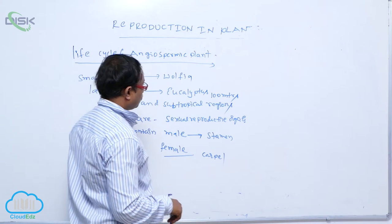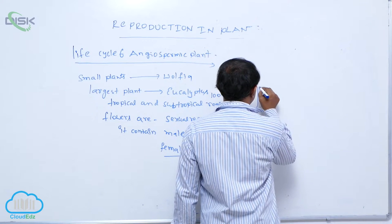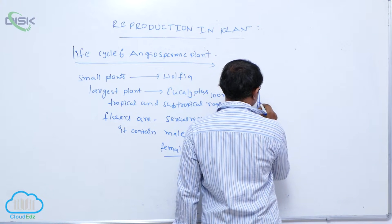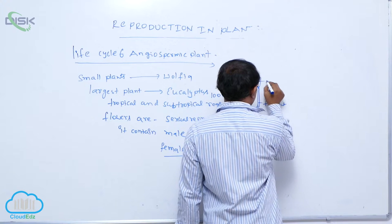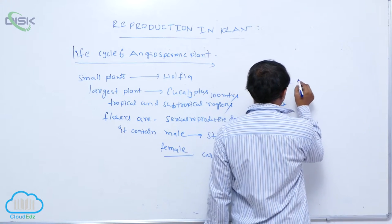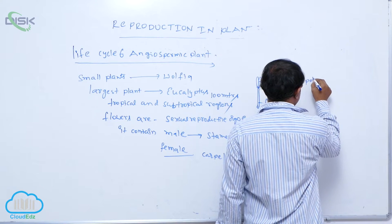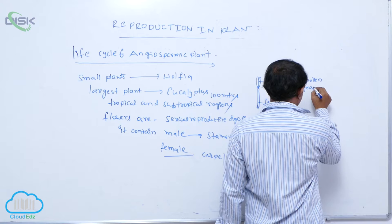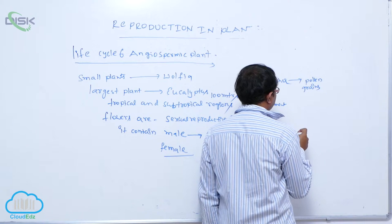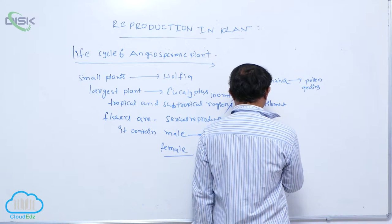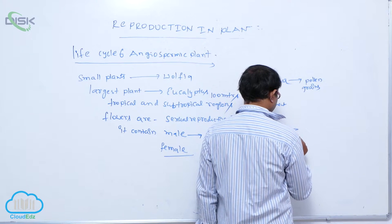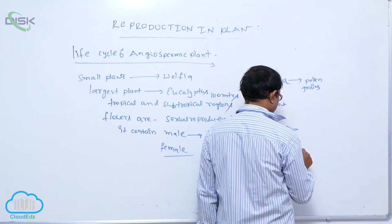The stamen has mainly two parts: the filament and, above that, the anther. The anther produces pollen grains, which are released from the anther at maturity. The carpel is divided into three parts: stigma, style, and ovary, inside which are the ovules.